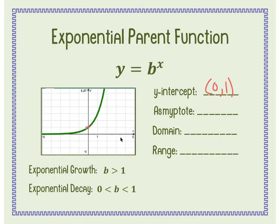An asymptote is an imaginary line that your graph is never going to cross. It looks like the graph is touching the x-axis, but it's actually never going to touch that line. So we've learned that the asymptote is y equals 0. If there are no transformations — no left, right, up, or down — then the asymptote is y equals 0.